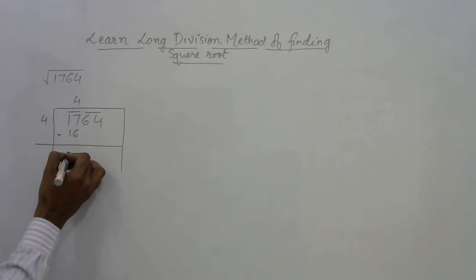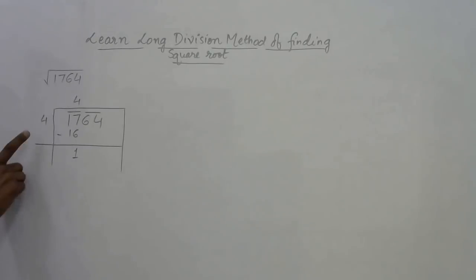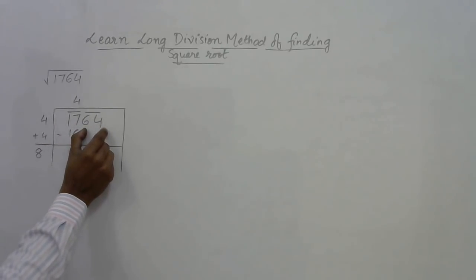This is the first step—our answer will start with 4. Now subtract: 17 minus 16 gives you 1. On the left hand side, add the same number above, giving you 8.